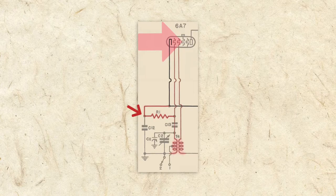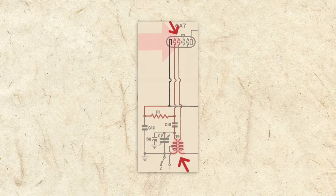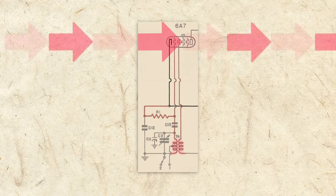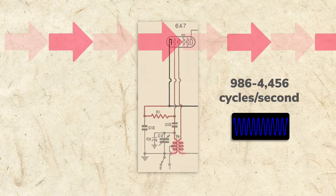The resistor only allows so much current from cathode to grid 1 though, and as it reaches its limit, it reduces the voltage on grid 1, causing less current to flow to grid 2, and less current to flow through the resistor. Very quickly though, grid 2 and the transformer start current flow to increase again, and the process repeats hundreds or thousands of times a second. This creates our oscillator frequency, which alternates at the same rate.